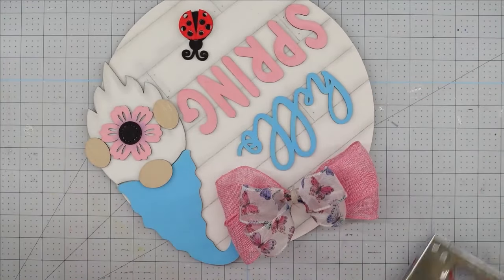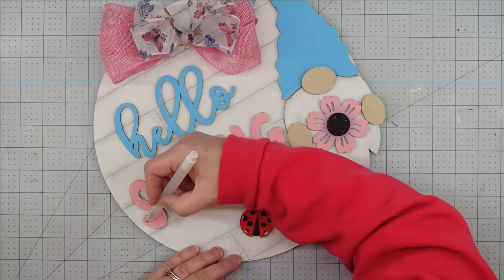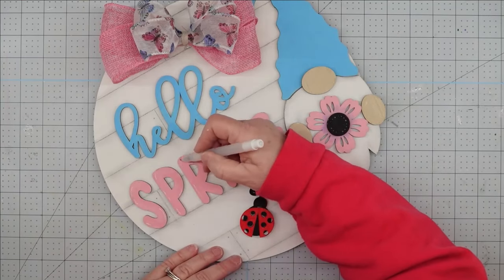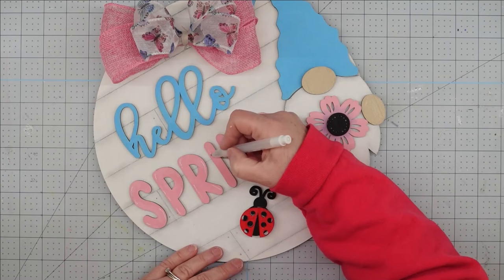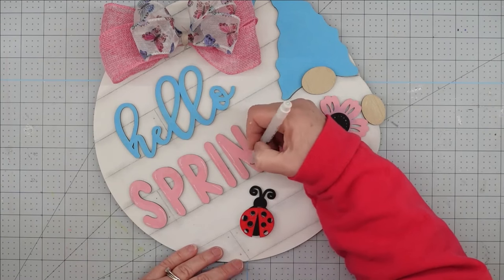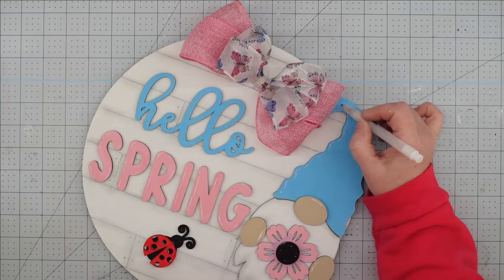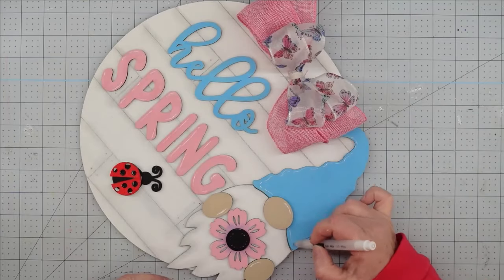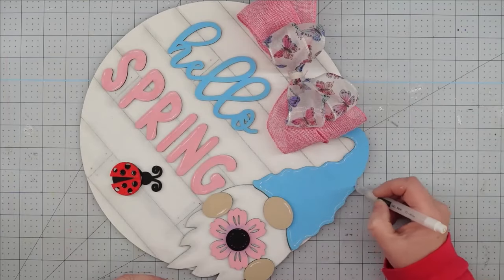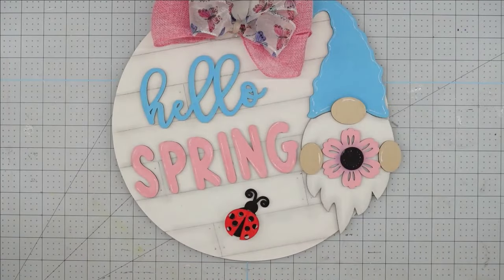Now, I decided to take a white marker and I'm just going to go around my little letters and make some little highlight marks. I did the same thing on my gnome's hands and his nose. Then I did some wiggly lines around the hat just to give it some dimension. And once you do that, this project is complete.